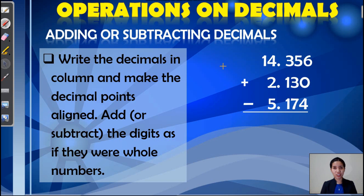Let us now have the operations on decimals. The first is adding or subtracting decimals. In adding or subtracting, we have to write the decimals in column and make the decimal points align. Then just simply add or subtract the digits as if they were whole numbers, just like the example here. As we can see, the decimal points are already aligned, so we just have to perform the indicated operations. We have here addition and subtraction. To begin with, we have to start at the right side. So we have 6 plus 0 minus 4, that's 2.